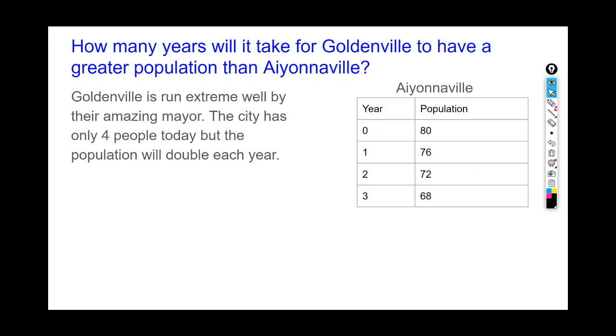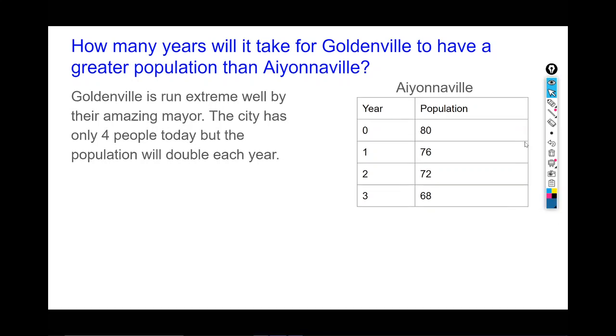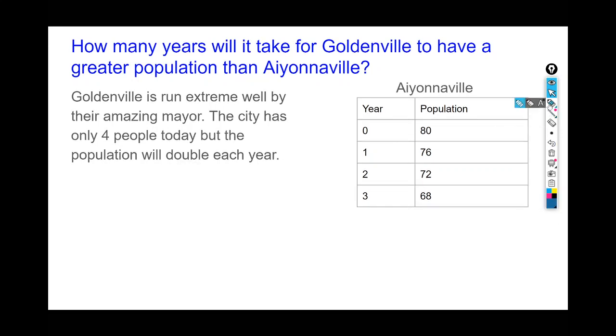Aiyonnaville on the other hand is represented—we're looking at a table. We can see here in year zero, right now has population of 80, and it looks like their population is going down. So the first step here is we're going to have to identify what type of functions are each of these. We've looked at exponential functions enough to know that when we see a word like double, we're probably looking at an exponential function.